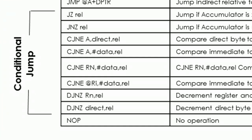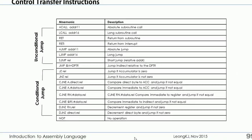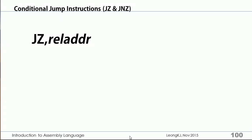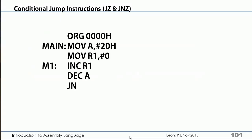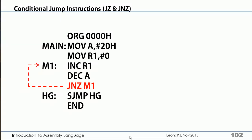We have covered the CJNE and DJNZ instructions. Now let's look at the control transfer instructions JZ and JNZ. JZ jumps if the Accumulator is zero; JNZ jumps if the Accumulator is not zero. The JNZ instruction causes a jump to M1 if the Accumulator is not zero; otherwise, the program continues executing the next instruction.